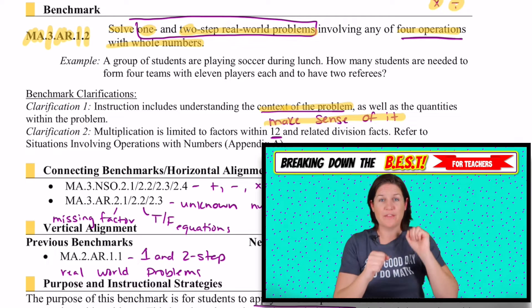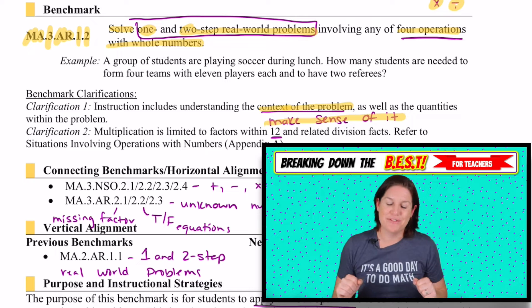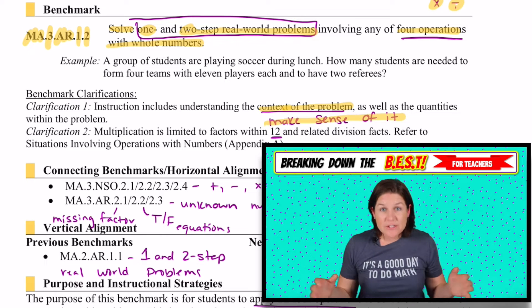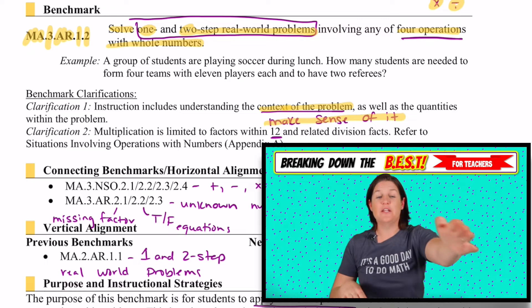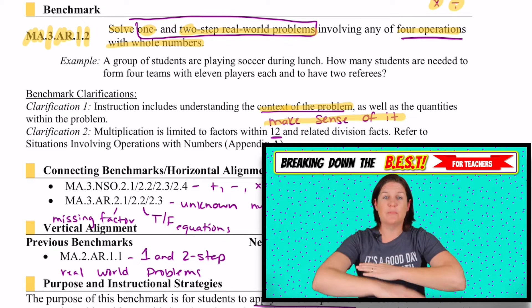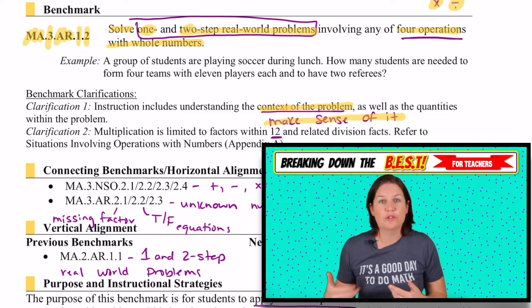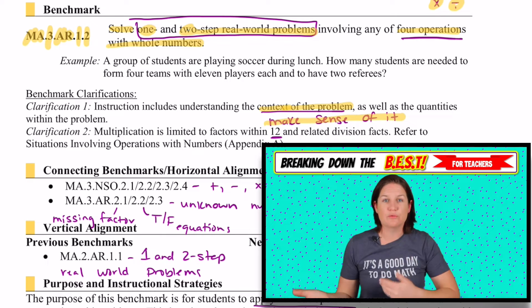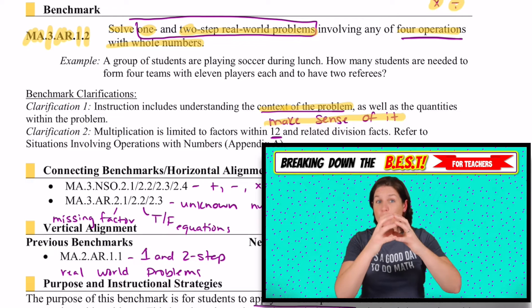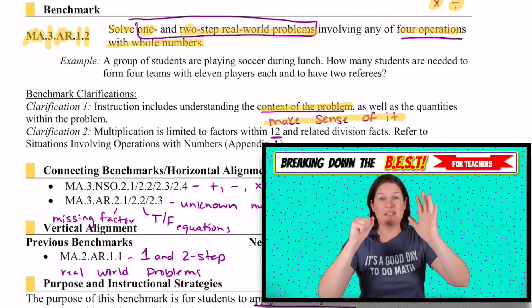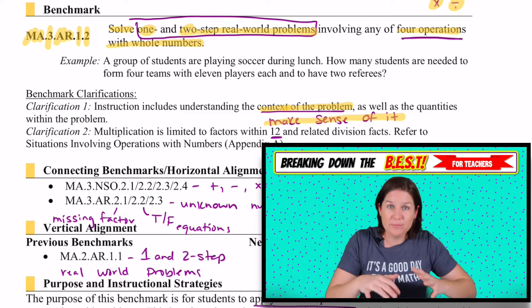Separating, comparing, and the part-whole for subtraction. For multiplication, we know that we have groups of equal things — that could be rows of equal amounts or days that we're doing the same thing over and over again. And for division, that's where we know the total amount and we're separating something into groups.